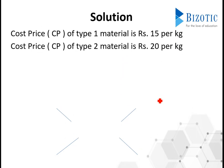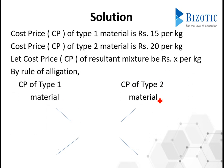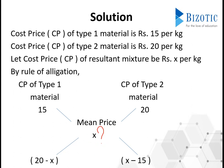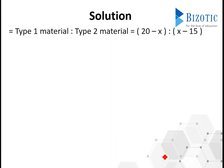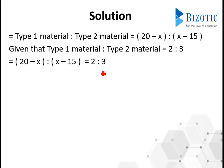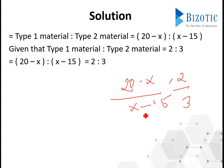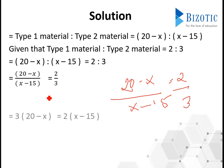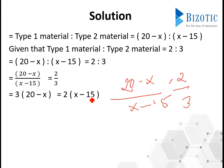Cost price of the first material is 15, the second is 20, and the mean X is unknown. By the allegation method: (20 minus X) and (X minus 15). These are equated to the mixture ratio 2:3. So (20 minus X) / (X minus 15) = 2/3. Cross-multiplying: 3(20 minus X) = 2(X minus 15), giving 60 minus 3X = 2X minus 30. Solving: 5X = 90, so X = 18.